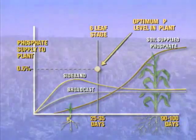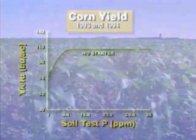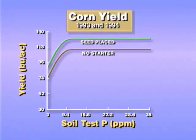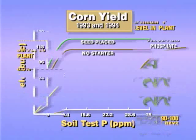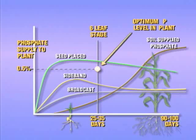More recent results have come from a 1993-94 university study on corn. The two years of data collected showed a seven-bushel response to seed-placed phosphate, regardless of the soil test level. Side-banded phosphate only gave a response at low soil test levels. At soil test levels of 15 parts per million or above, the only placement that gave a yield response was seed-placed phosphate. Research has shown seed-placed phosphate to be the most effective — the phosphate goes where it's needed, when it's needed.